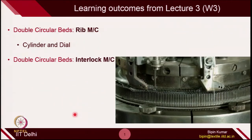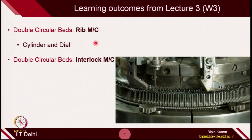In this lecture, our main focus is double circular beds. We are still continuing with the production of double jersey fabrics, which requires 2 beds. We have seen the flat category; now we are moving towards the circular category. The first machine we are going to learn is the rib machine, which has 2 beds — one is called the cylinder and the other is the dial — where needles are placed and actively take part in the knitting process. We will also see another category called interlock machines. Both rib and interlock look similar, but the arrangement of needles on the 2 beds is different.